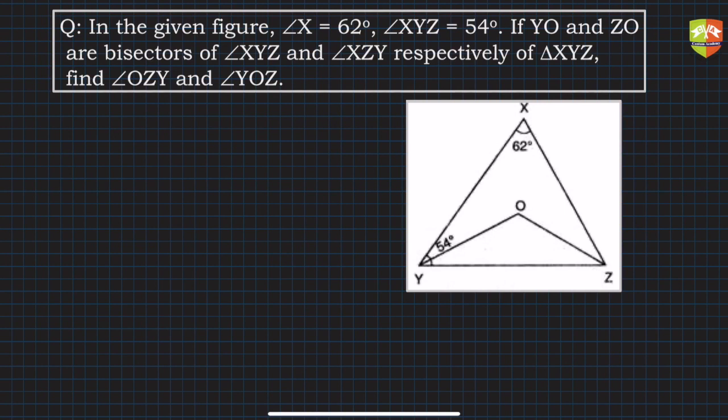Hello and welcome to another problem solving session on triangles. In the given problem, it has been given that angle X is 62 degrees, so you can see that on your screen. This angle is 62 degrees. And angle XYZ is 54 degrees, so clearly this angle is 54 degrees.